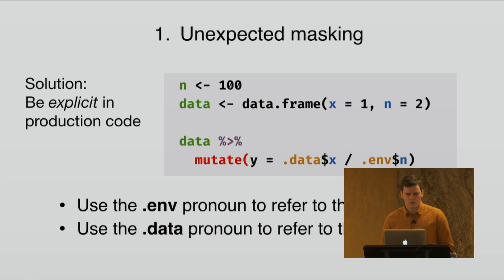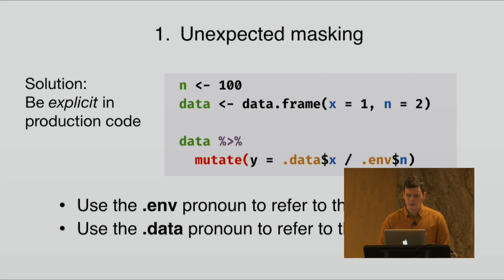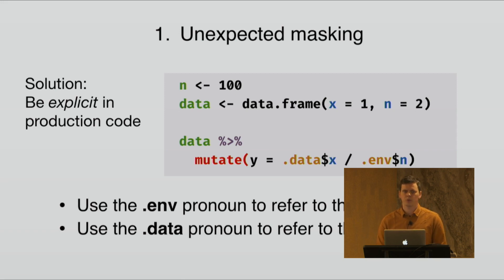The solution is to be explicit when you are writing production code. To do that, you use the `.data` pronoun or the `.env` pronoun. These pronouns are available in all of the data masking functions in the Tidyverse. So here you have modifying the data frame, but this time dividing `.data$x` by `.env$n`. Now we are completely explicit about where the data comes from and we have resolved the ambiguity.